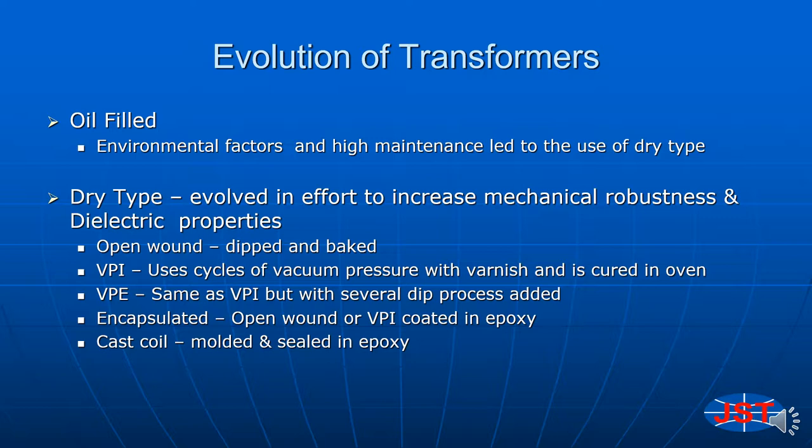Later processes were developed that would provide for a forced displacement of air trapped between the transformer windings with varnish. Vacuum pressure impregnation or VPI is one such process. VPE includes several additional dip processes to offer better protection against the elements. Encapsulated transformers are simply open wound dipped and baked or VPI transformers that are encapsulated with a protective insulating coating such as epoxy.